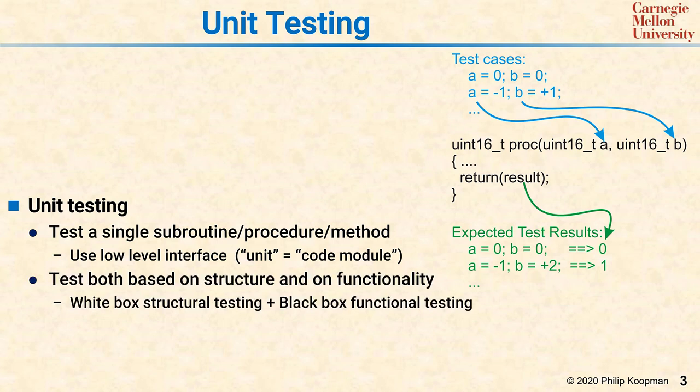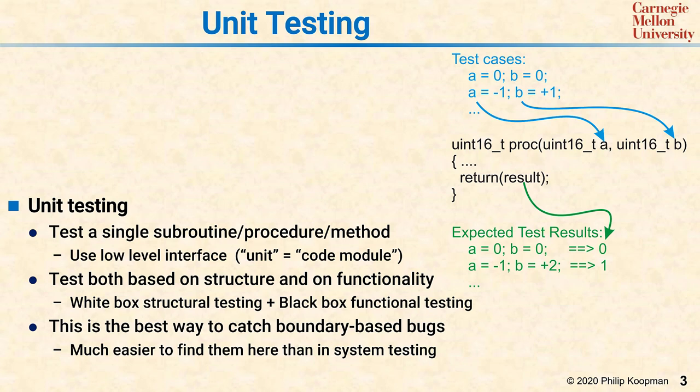Unit tests should include both structure and functionality. Structure refers to white box tests, functionality refers to black box tests, and we'll talk about both of those. Unit testing is your best chance to catch boundary-based bugs and other bugs due to slight imperfections in how the code was implemented. It is going to be much easier to find those sorts of bugs here in unit test than at the system testing level.